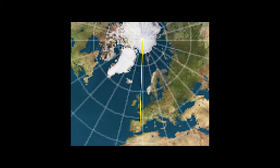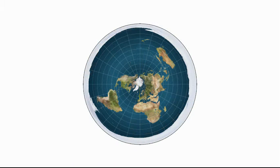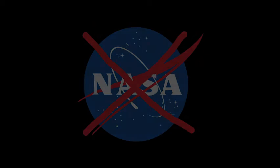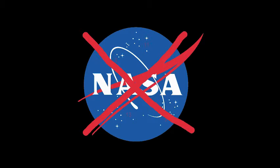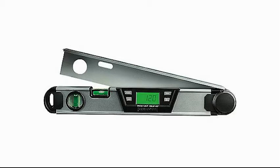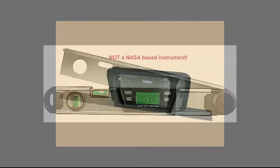Even lines of longitude are present on the flat Earth map, as we can see here. To make this measurement we need to use an instrument that can measure the star's angle. Digital angle finders can now be purchased for about 20 pounds from many outlets, come in different forms, and are not NASA-based. The instrument just needs to be level, with the angle of the star viewed along the length of the finder, and could be fixed to a tripod for greater stability and accuracy.